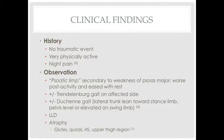During the subjective patient history, you will often find a very physically active child complaining of night pain with no history of a specific traumatic event. Upon observation, a psoatic limp can be seen due to weakness of the psoas major, appearing worse following activity and eased with rest. You may also observe a Trendelenburg gait and/or a Duchenne gait, portrayed as a lateral trunk lean toward the stance leg, along with leg length discrepancy and atrophy of the glutes, quads, hamstrings, and muscles of the upper thigh.